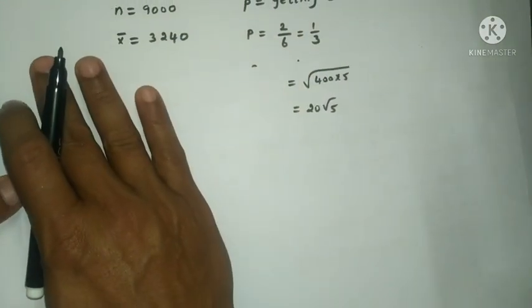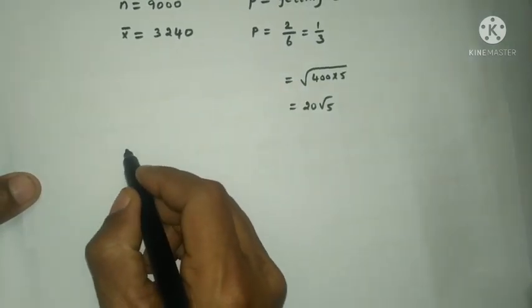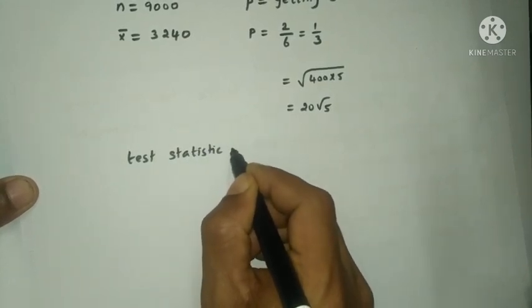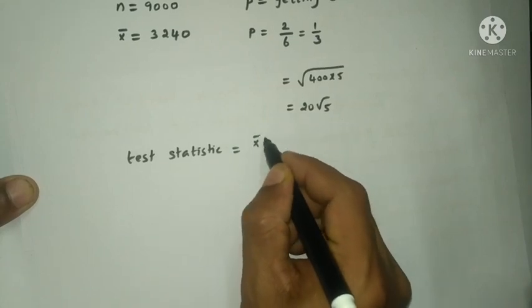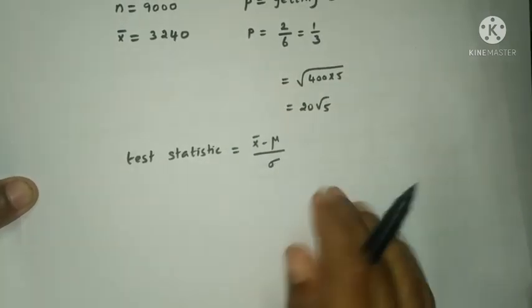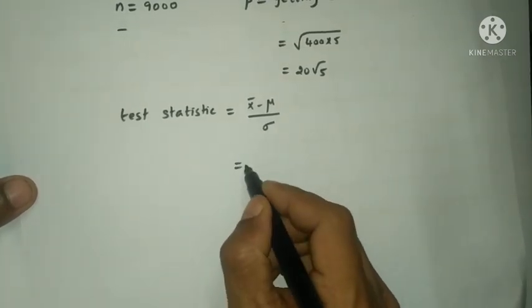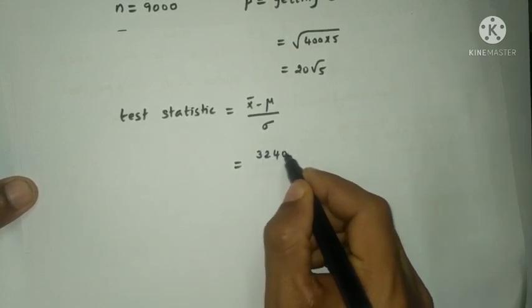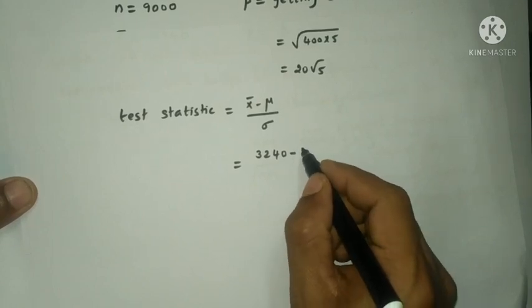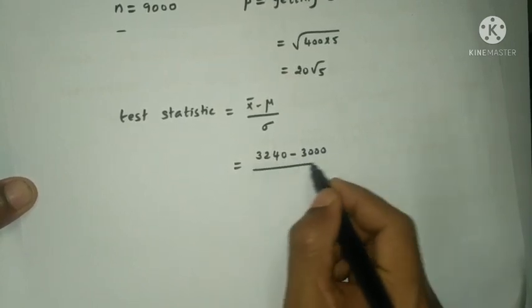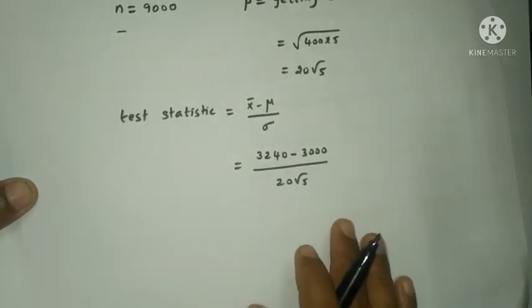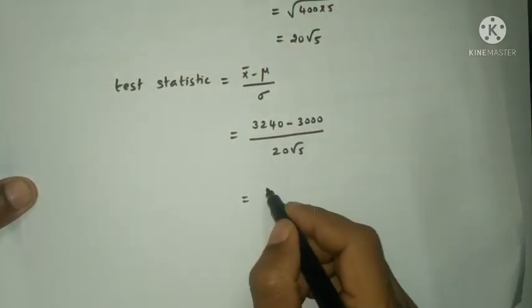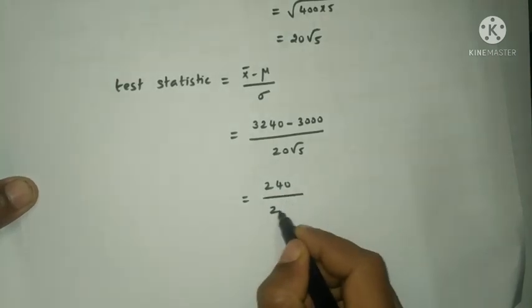Test statistic formula is x bar minus mu by sigma. x bar is 3240 minus mu which is NP, that is 3000 divided by sigma which is 20 root 5.